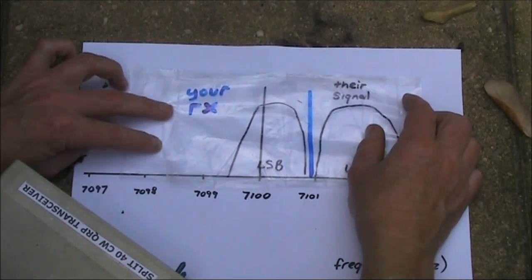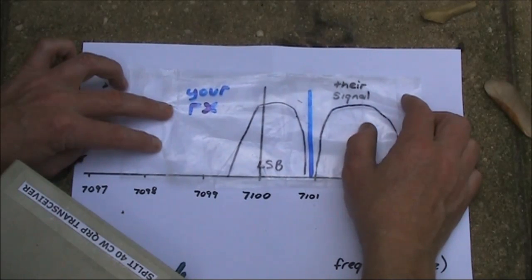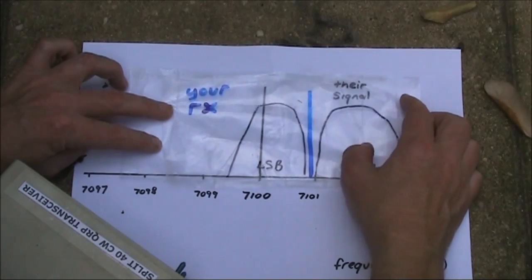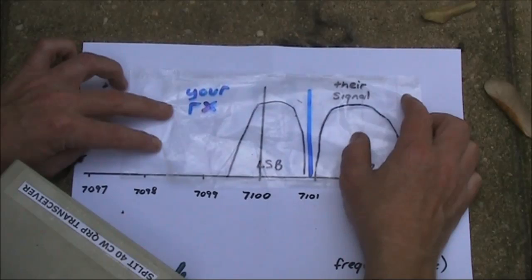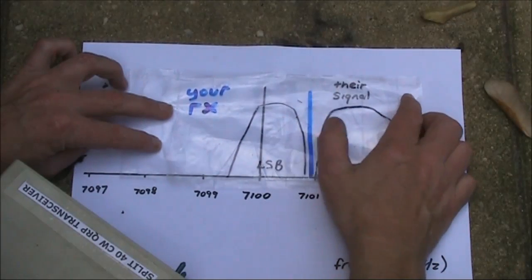If you're using a superheterodyne receiver which has a crystal filter, or a special type of direct conversion receiver which has phasing circuitry to null out the opposite sideband response, then you'll be fine. You'll only hear the desired signal.